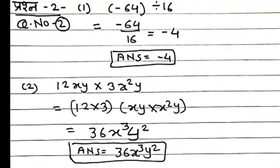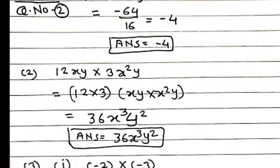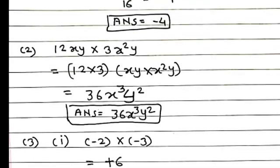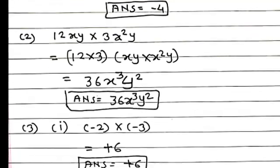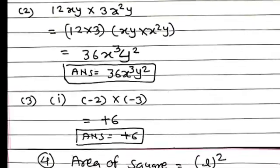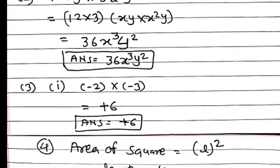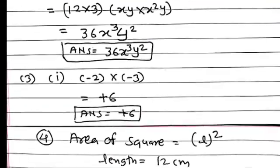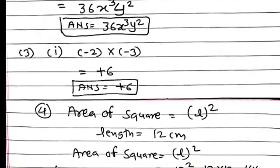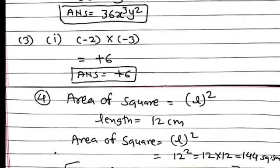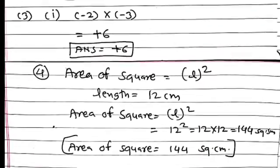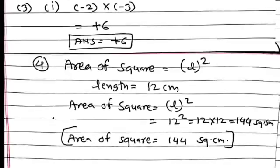Second: 12xy into 3x squared y is equal to 36x cubed y squared. Third: minus 2x times minus 3 equals plus 6. Area of square equals length squared. Length is 12 cm, so 12 times 12 equals 144 square cm. Answer: area of square equals 144 square cm.